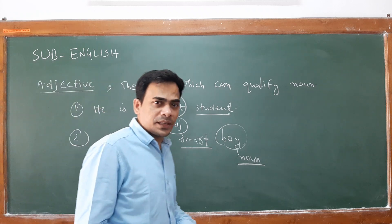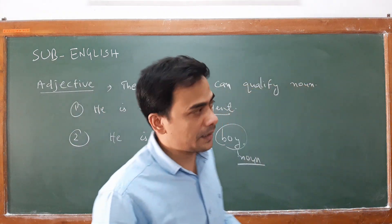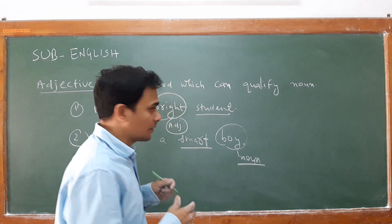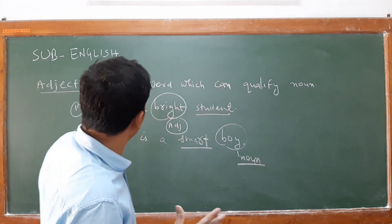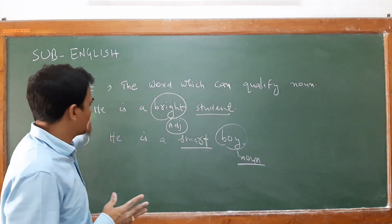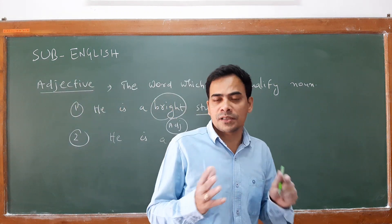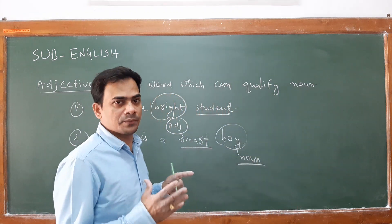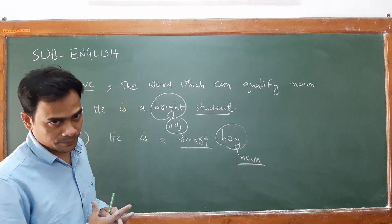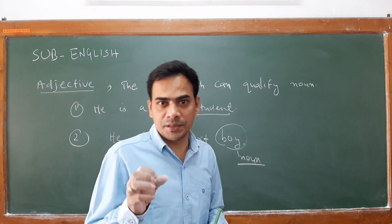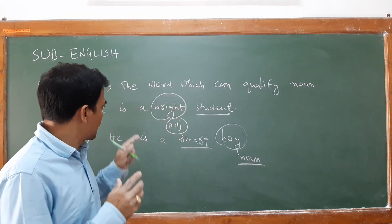Well, dear students, today we shall learn about adjective forms and degrees of comparison. Let me first tell you what an adjective is. An adjective is a word which can qualify your noun. I have cited two examples for you.